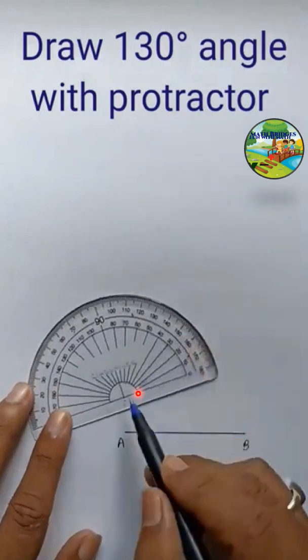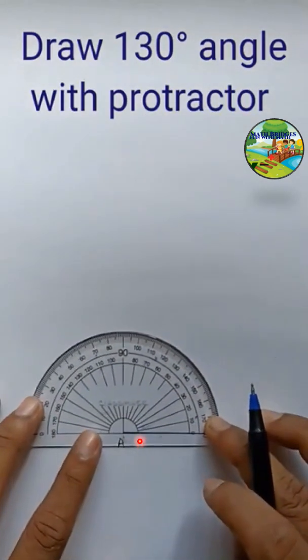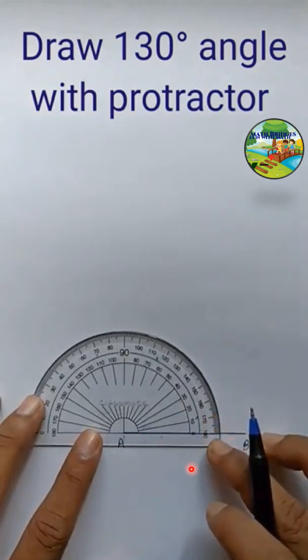Take the protractor. The center point of the protractor and the baseline of the protractor must coincide with the line AB. See here, AB and the baseline of protractor.